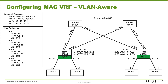Host 3 uses .3 and host 4 uses .4. We also have IRB interfaces configured. IRB 10 uses virtual gateway address 10.1.1.254 and IRB 20 uses virtual gateway address 10.1.2.254 on both leaves. The hosts use those as their default next hop so they can reach hosts outside their subnet. Let's jump to the CLI of leaf 1.